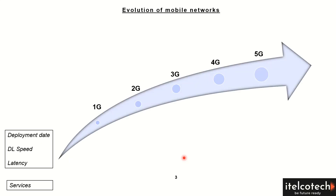Let's talk about the evolution of mobile networks. There are three key areas defining the technology: downlink and uplink speed, latency, and the services being provided.